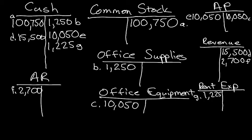Next, the company collected $1,225 cash as partial payment for the accounts receivable created in transaction F. They collected cash, so cash in the company increased. Cash is an asset account — in order to increase an asset account you debit it, so we debit cash $1,225. They also paid off part of their accounts receivable, so the accounts receivable account decreased. In order to decrease an asset account you credit it, so we credit accounts receivable $1,225.